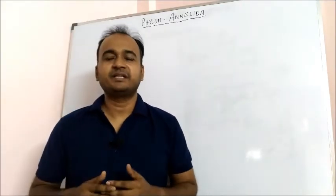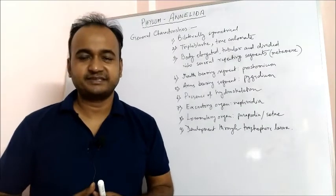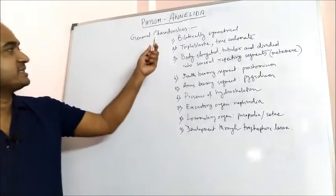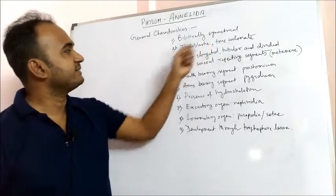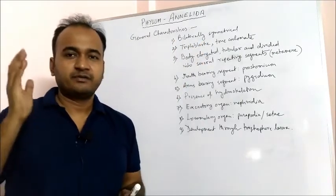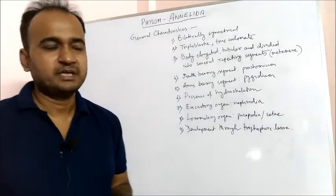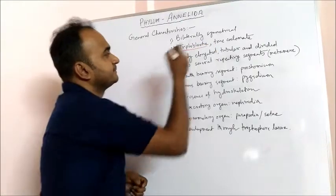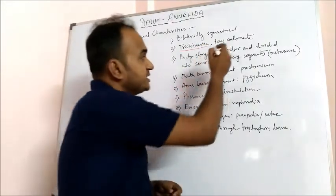Phylum Annelida deals with the ringworms. General characteristics of Phylum Annelida: first, the body is bilaterally symmetrical and has three body layers — ectoderm, endoderm, and mesoderm. That is why they are triploblastic and truecoelmate.